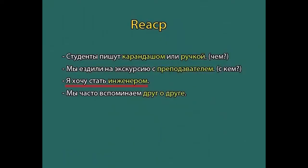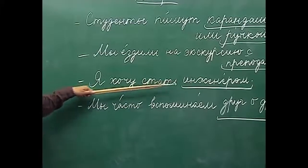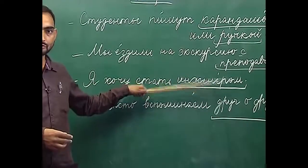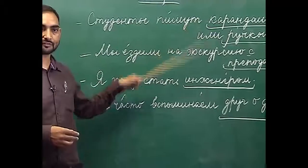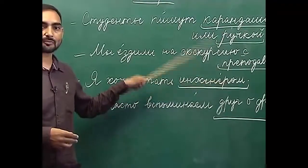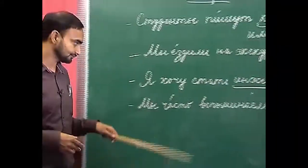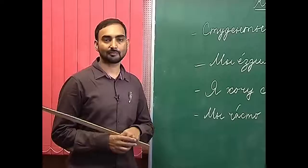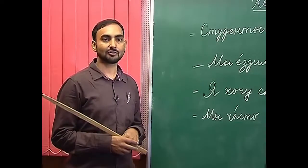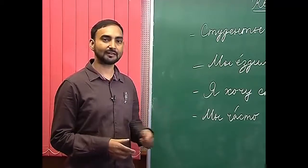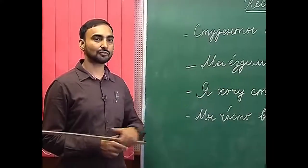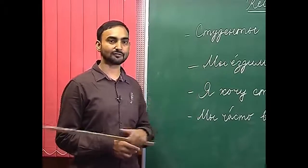For example: I want to become an engineer. Here we are using the noun after the verb стать, that is why 'engineer' has been changed into the instrumental case. Apart from these three uses, there are other verbs, mainly reflexive verbs which have non-reflexive English counterparts, and whenever we use those verbs we use the instrumental case of nouns.